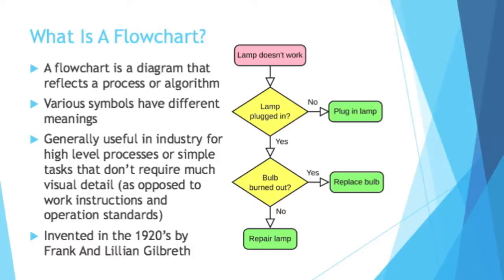What is a flowchart? A flowchart is a diagram that reflects a process or algorithm. Various symbols have different meanings. Generally useful in industry for high-level processes or simple tasks that don't require much visual detail.